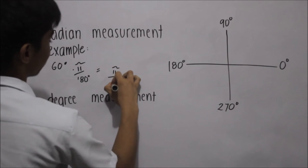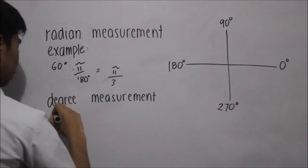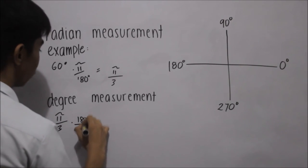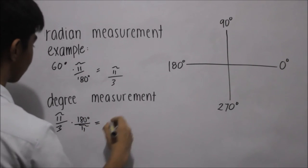So pi over 3 times 180 degrees all over pi equals 60 degrees.